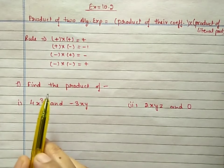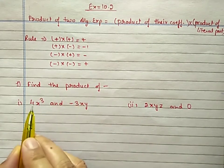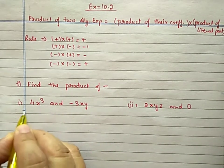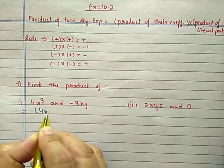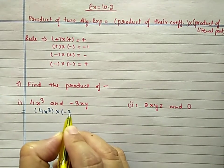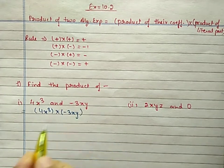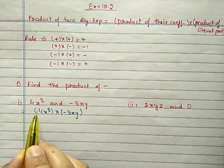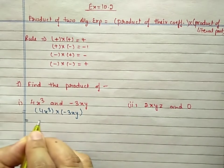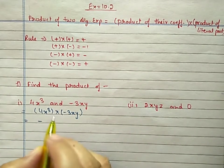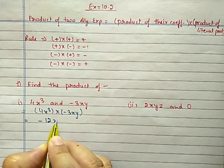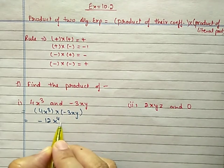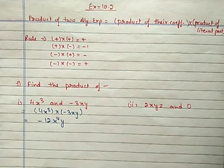We will start the exercise. Find the product of 4x³ and −3xy. You have to multiply 4x³ and −3xy. First, the symbol: there is no symbol before 4, so it is plus. Plus and minus will become minus. 4 into 3 is 12. x to the power 3 plus 1 gives 4, so x⁴. And y has power 1 only. So the answer is −12x⁴y.